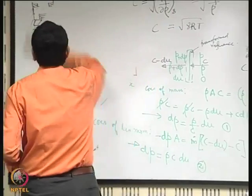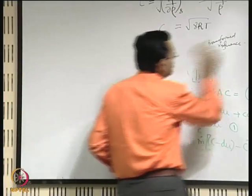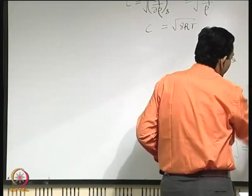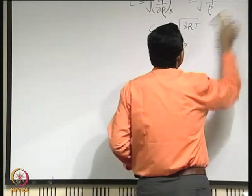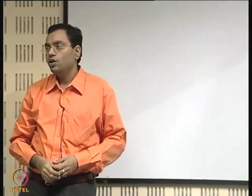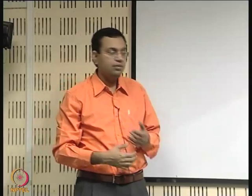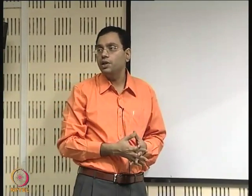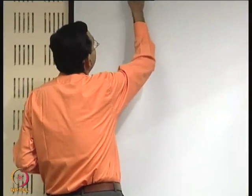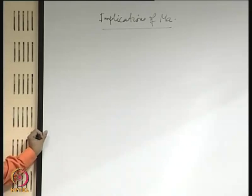Now the next thing we will see is that we have seen what the sonic speed is, its physical implication, and the parameters on which it depends. The next question is: we have seen an important non-dimensional number called the Mach number — the ratio of flow speed to sonic speed — and its important consequence for the extent of compressibility. So how that Mach number influences the nature of propagation of disturbance within a medium, let us look into that more carefully by considering some important limiting cases.